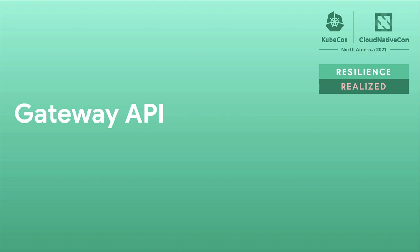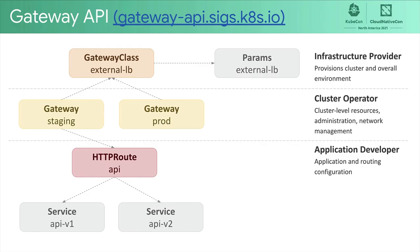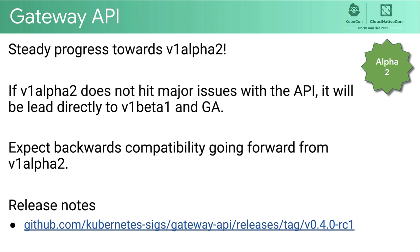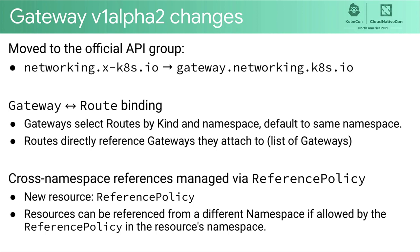The gateway API has also made significant progress during the 1.22–1.23 time period. Gateway API is the next version of the Kubernetes APIs describing L4 and L7 services in the cluster. It aims to be role-oriented and extensible, allowing users to configure services with modern functionality split across ownership boundaries. We have been making steady progress towards v1alpha2. If v1alpha2 does not uncover major issues with the shape of the API, it can lead directly to v1beta1 and GA. We expect as much backwards compatibility as possible going forward from v1alpha2. Detailed release notes can be found at the link below. First, we have moved to the official API group for the project, which is gateway.networking.k8s.io.